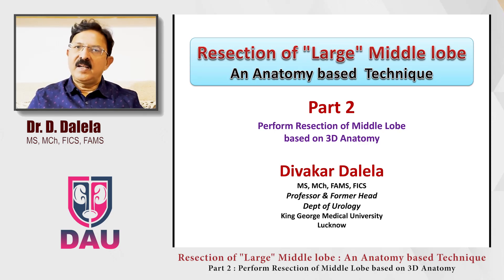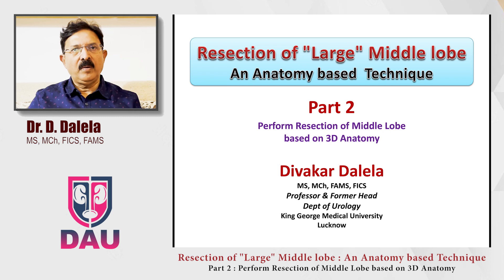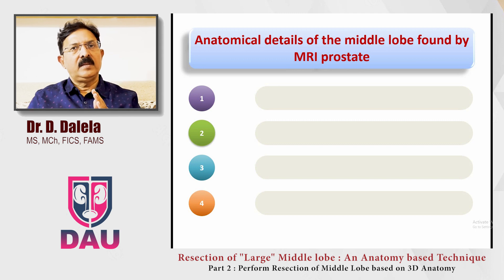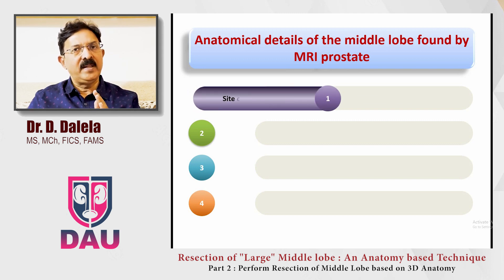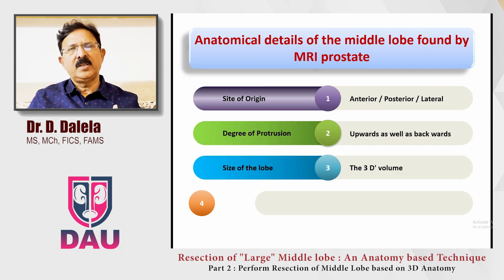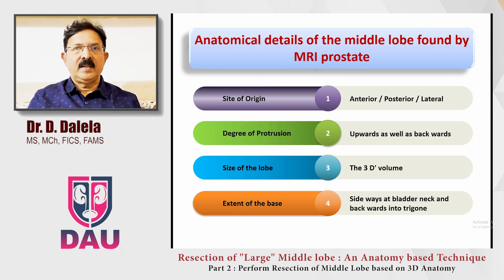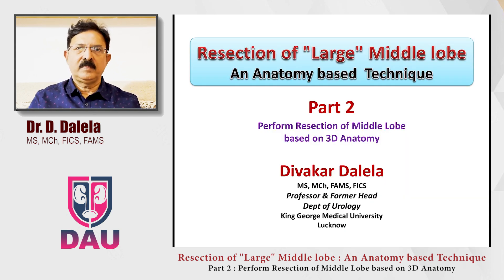Hello friends. In continuation to my talk on an anatomy-based technique for trans-urethral resection of the middle lobe of the prostate, I want to talk to you in this video about the endoscopic technique part. Once you have known the anatomy of the prostate and middle lobe in detail by using the methods I spoke in the former video — just like an army operation where you want to know everything about the target — you know everything about the middle lobe by the 3D MRI and now you have to perform the trans-urethral resection.